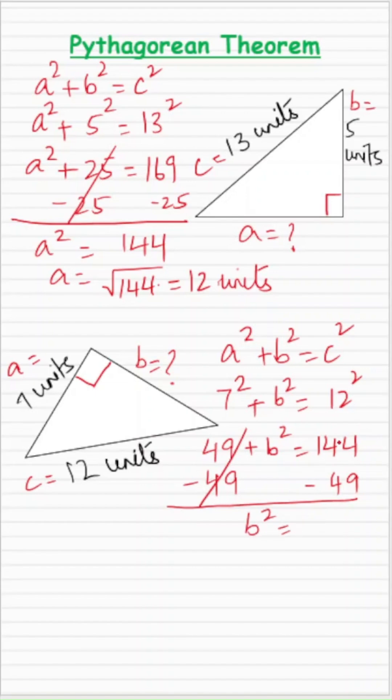So B² comes out to be 144 - 49 = 95. To find the value of B, I'll take the square root of 95. You can use a calculator or estimation methods. So B would come out to be approximately 9.75 units, and that's the value of the missing side B of this right angle triangle.